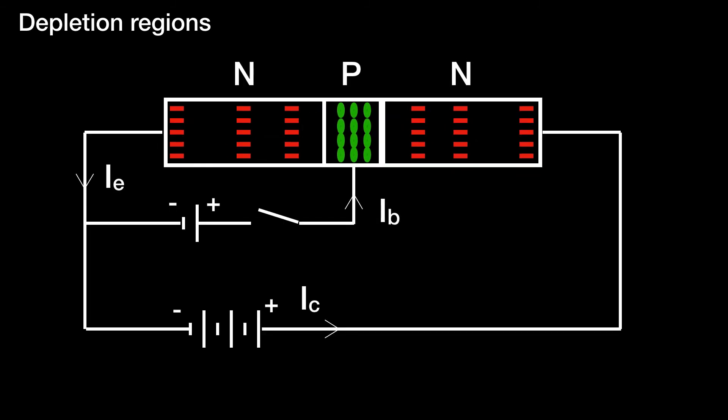If we put the transistor into a circuit with a battery potentially providing voltage between the emitter and the base—if the switch is open, current won't be able to flow between the emitter and the collector because of the two depletion regions that occur.